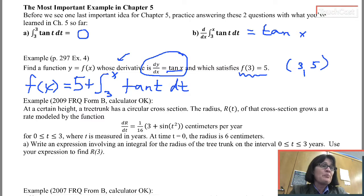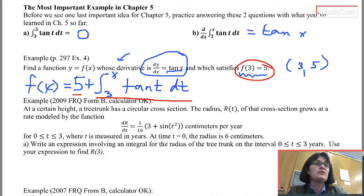Now I can double check that both of my criteria are true. If I took the derivative of this function with respect to x, the derivative of 5 is 0. The derivative of this integral is tangent x. So the derivative of f will be tangent x. And I have to double check that if I use 3 as the input, that 5 would be the output. Well, if I use 3 as the input, imagine that upper limit being 3. The whole integral becomes a 0, and my f of 3 will be 5.